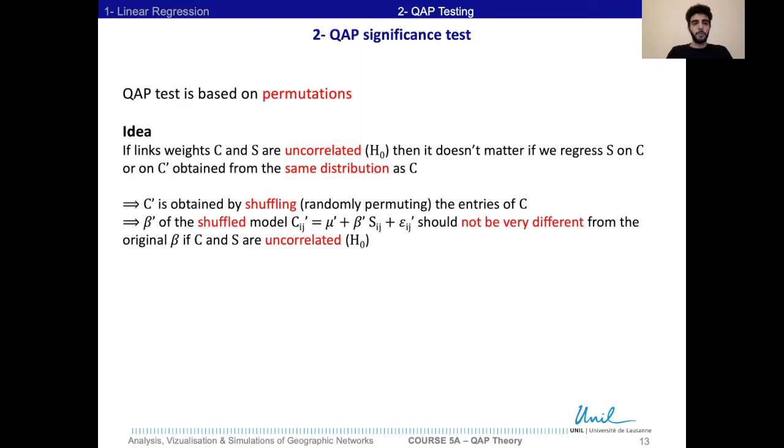And then we compute a beta prime of the shuffled model corresponding to regressing S on C'. And then if they are uncorrelated, then the beta prime should not be very different from the original beta.